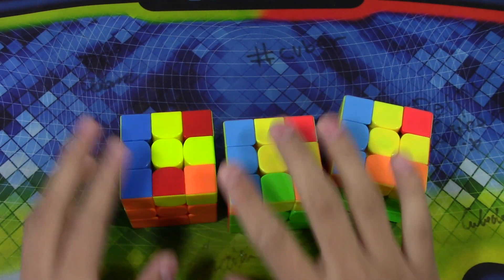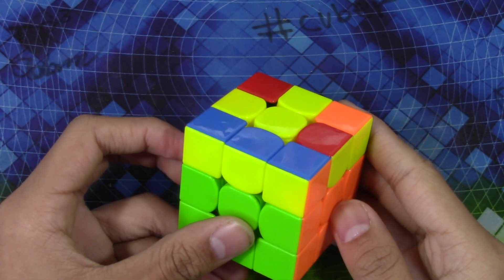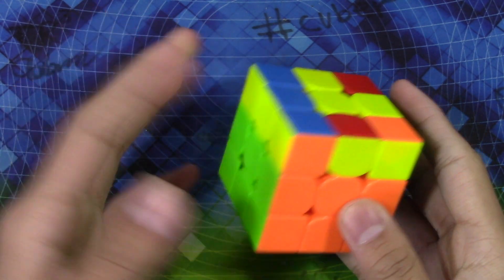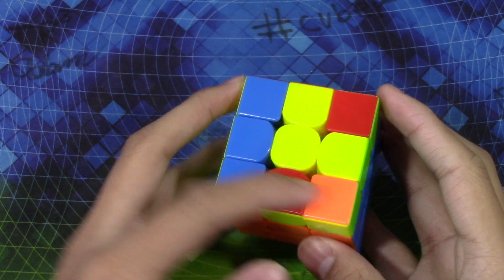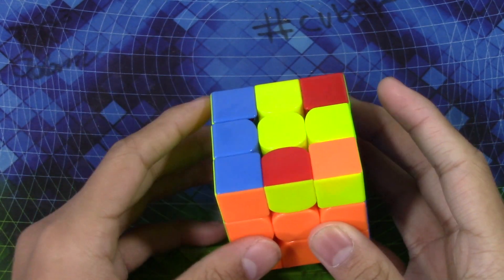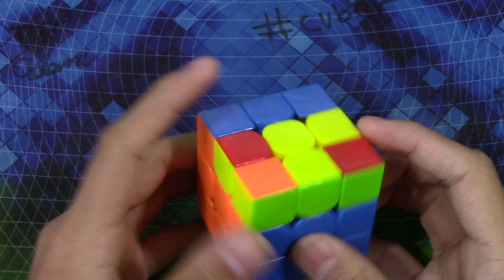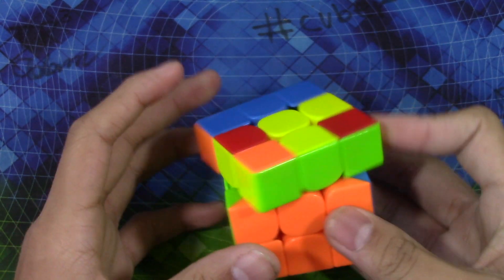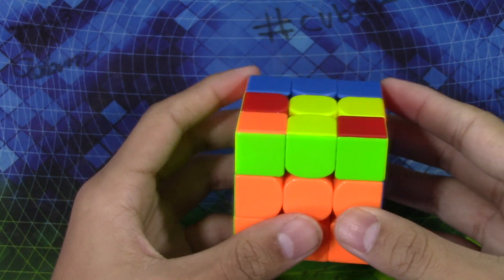For this first case, as we see earlier, we have the diag swap and the bar here, and these two colors are opposite. So when these two colors are opposite, what you want to do is hold the blue bar in the back.